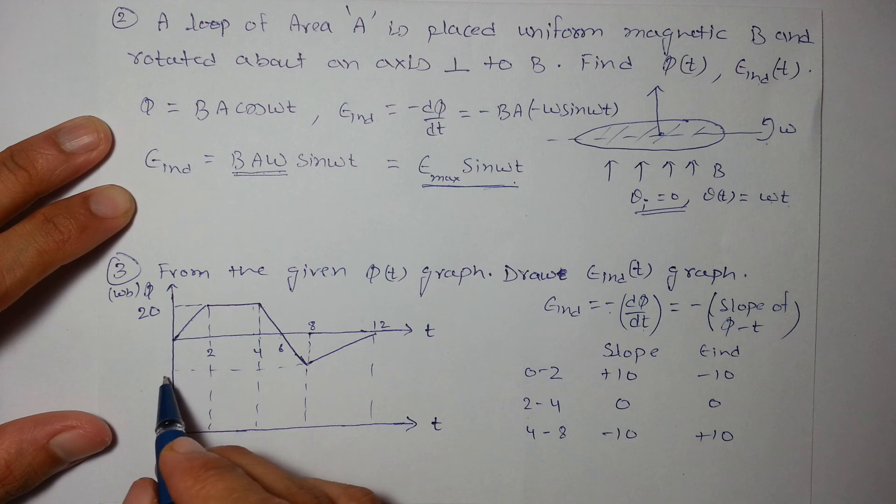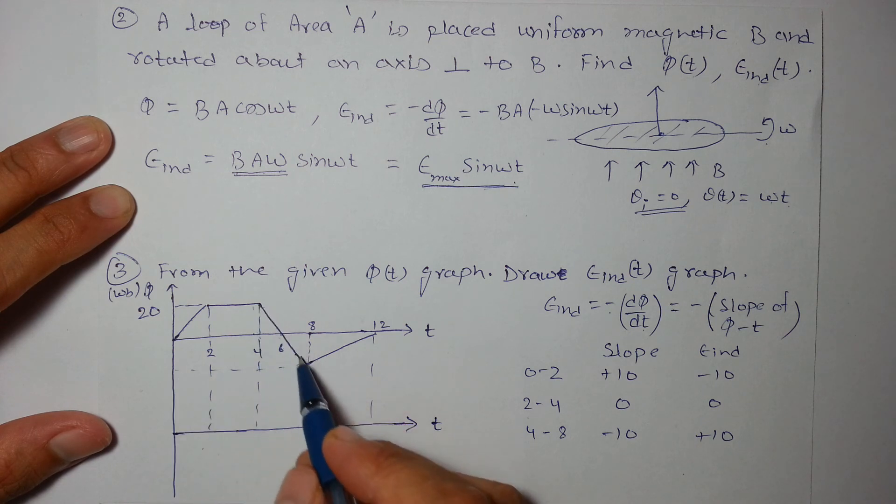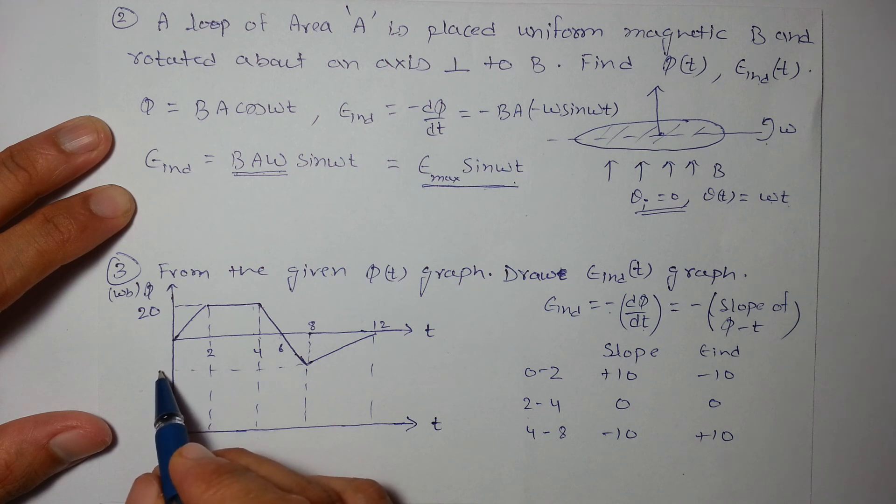You might think that I haven't given this value. The value need not to be given as this is a straight line. This will be -20. So this value will automatically be -20. I need not to give this value.